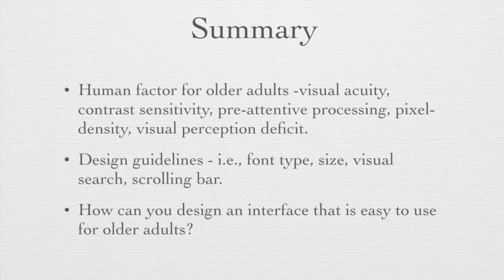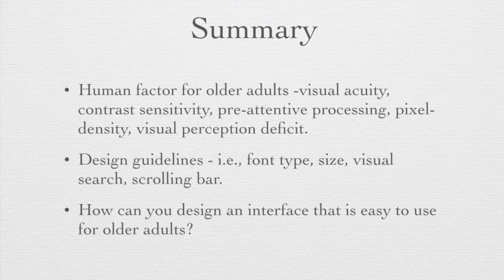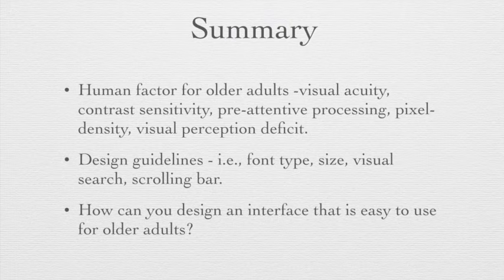In summary, we talked about human factors for older adults such as visual acuity, contrast sensitivity, pre-attentive processing, pixel density, and visual perception deficits. We also discussed design guidelines such as font type, size, visual search, and scrolling. At the end of this chapter, we would like to ask you: how can you design an interface that is easy to use for older adults?